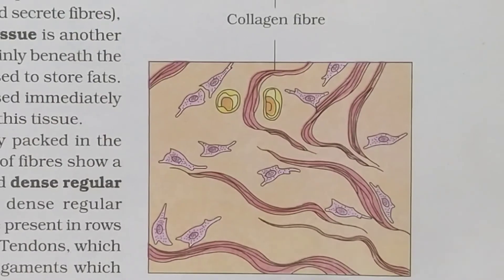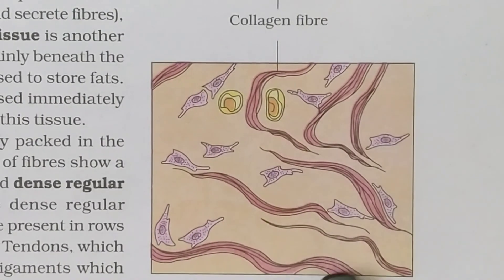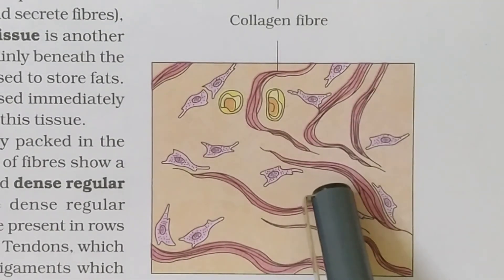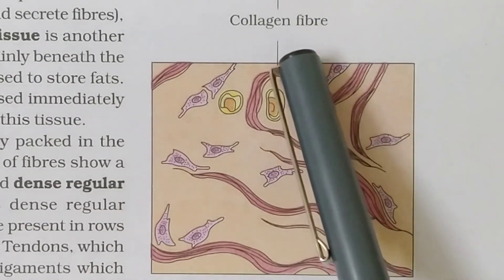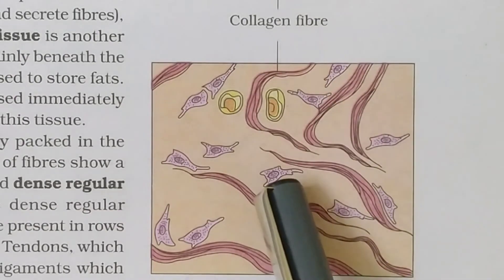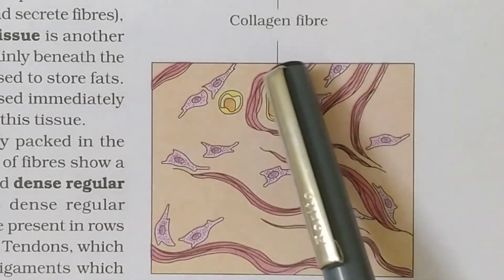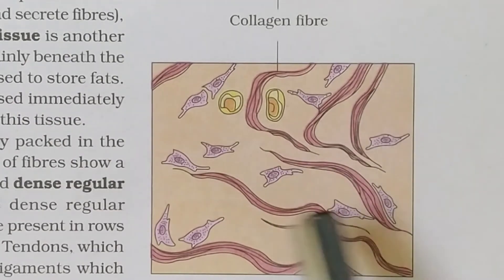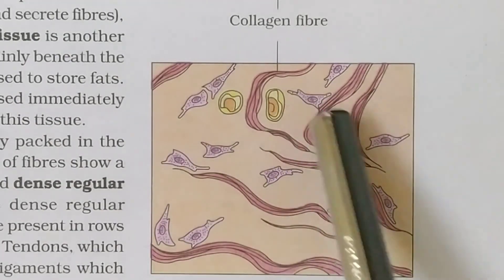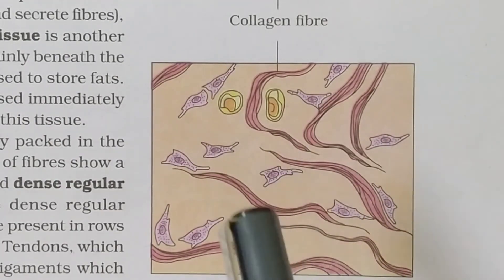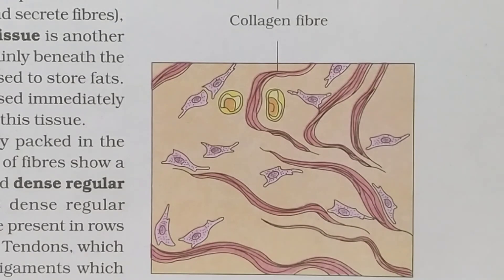This is the structure of dense irregular connective tissue. In dense irregular connective tissue, the collagen fibers are present in many directions — oriented in various directions — which is present in the skin.